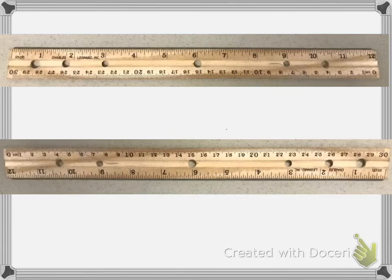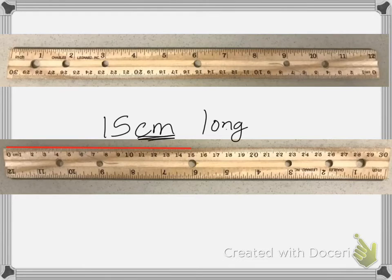Okay, so if I wanted to draw a line that was 15 centimeters long, I would start at the zero and draw my line until I got to the 15 centimeters. And then I would say that this is 15 centimeters long. We abbreviate centimeters by writing CM.